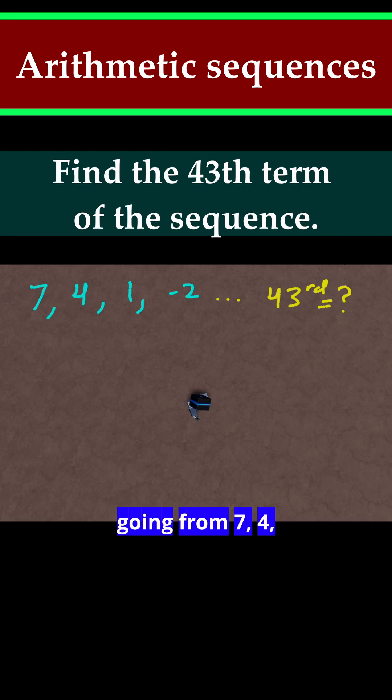So if we're going from 7, 4, 1 to negative 2, what's the change each time? Well realize that to go from 7 to 4 you're subtracting 3, 4 to 1 that's minus 3, and 1 to negative 2 that's minus 3. So therefore, I can say that minus 3 is our common difference, d.